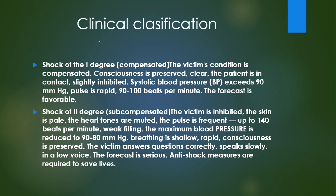Shock of the second degree: the victim is inhibited, skin is pale, heart tones are muted, pulse is frequent up to 140 beats per minute and weak. Maximum blood pressure is reduced to 80-90 mmHg. Breathing is shallow and rapid. Consciousness is preserved; the victim answers questions correctly but speaks slowly and in a low voice. The prognosis is serious — anti-shock measures are required to save life.